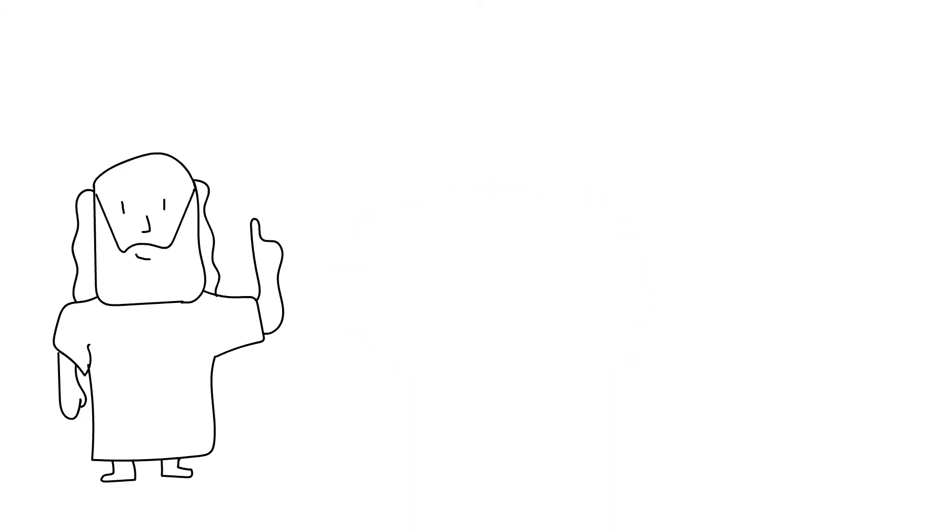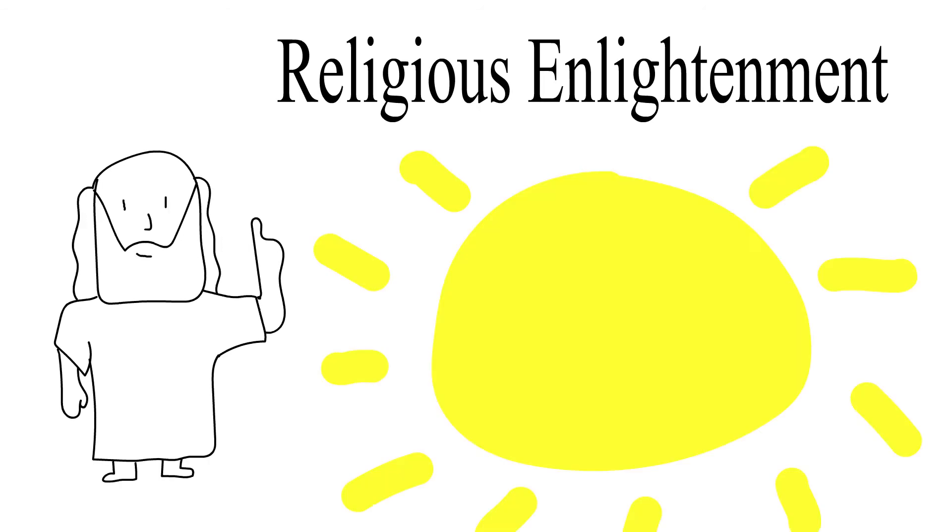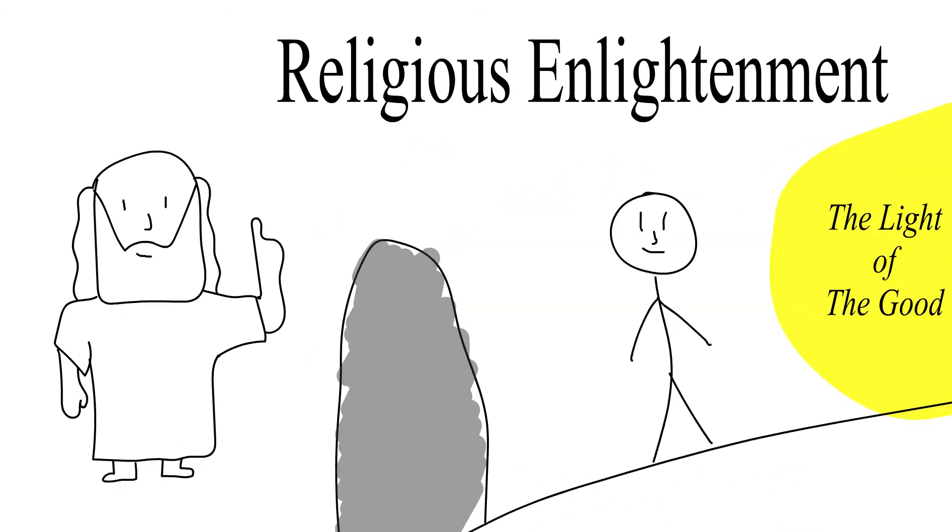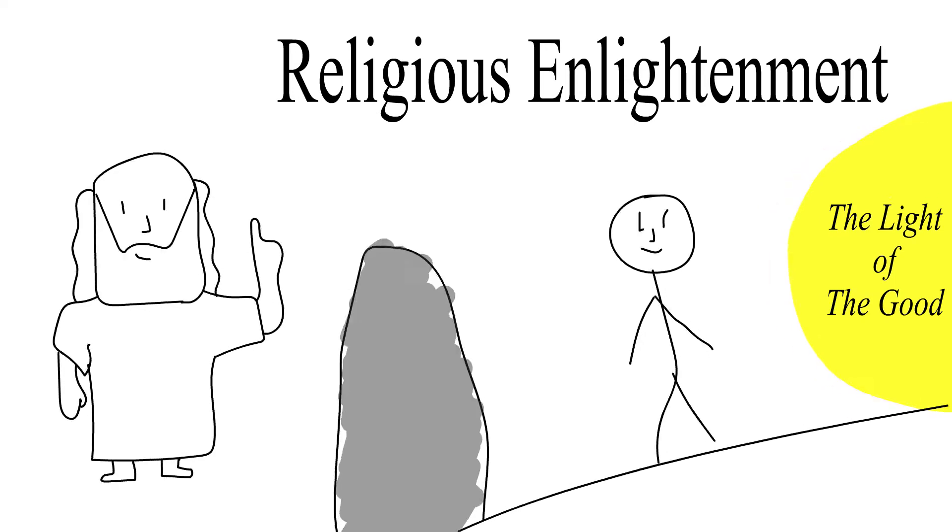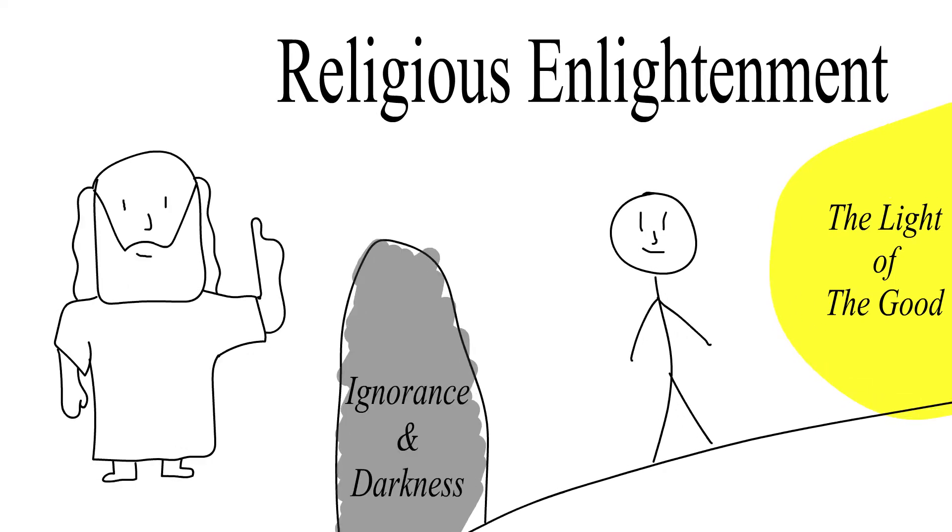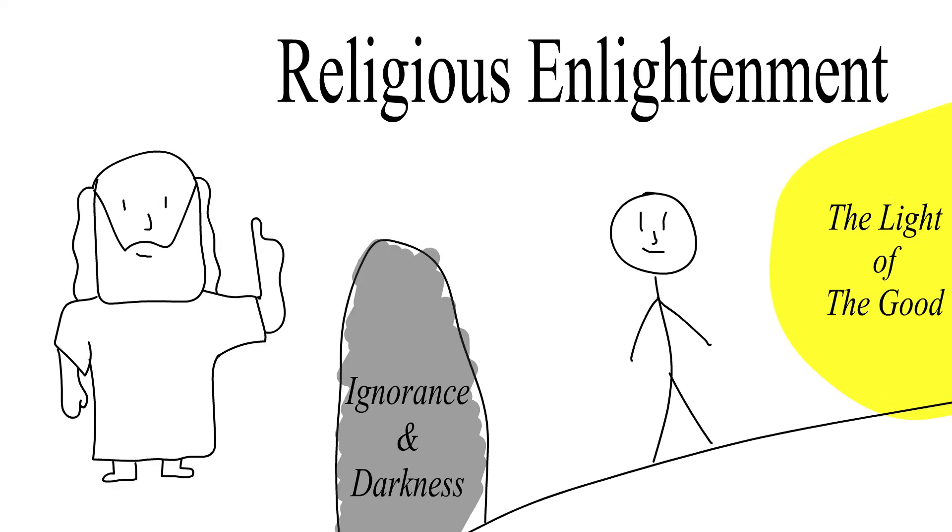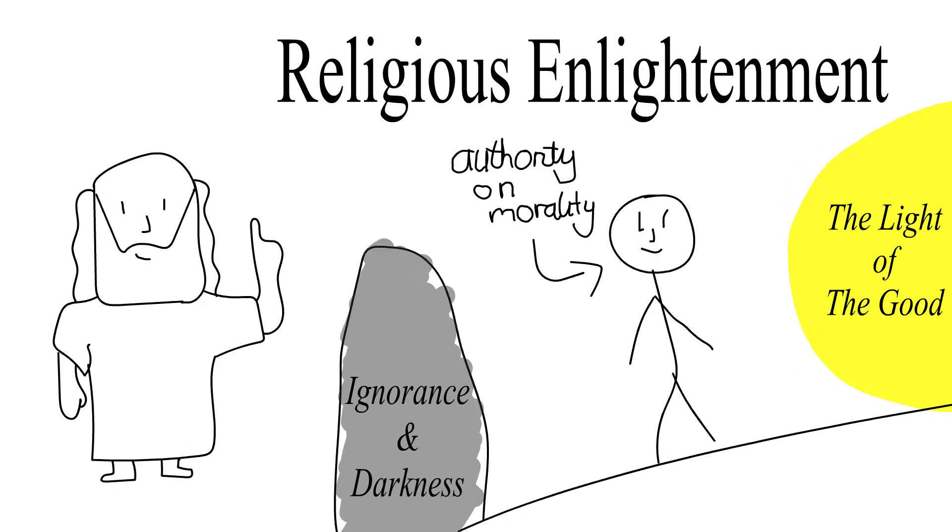The allegory could also be about religious enlightenment, the sun representing the light of the good. The prisoner who is enlightened to religion is momentarily released from the ignorance and darkness of humanity. The newly found illumination of this freed prisoner enables him to become an authority on morality.